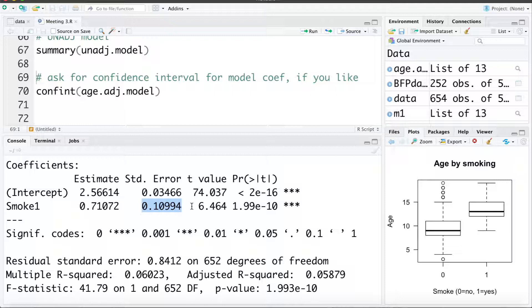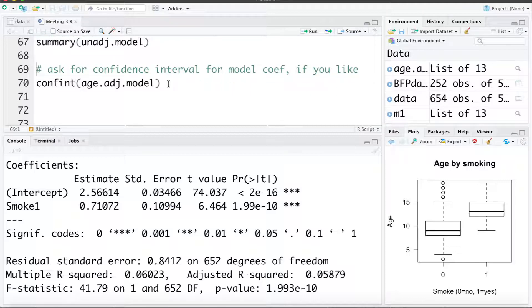Again, what we'd expect to see for a confounder: not much change in the standard error or maybe a little bit of a decrease. So numerically age seems to be behaving like a confounder and conceptually it makes sense as a confounder.